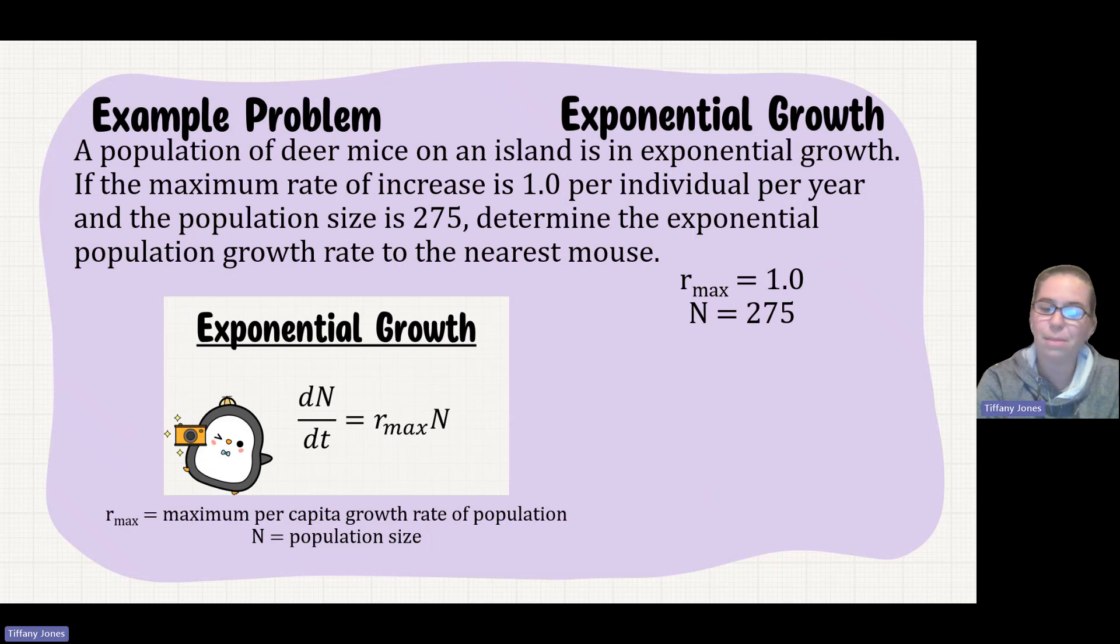Remember that r_max is the maximum per capita growth rate of population, and N is the population size. For this question, we see that it's 1.0 per individual per year, and the population is 275. Go ahead and substitute that in. So 1 times 275 gives you 275. In the first year, it's going to grow by 275.